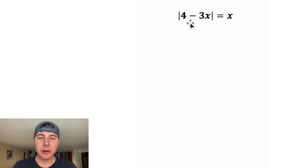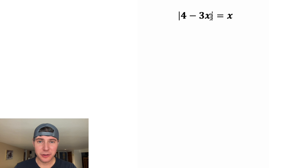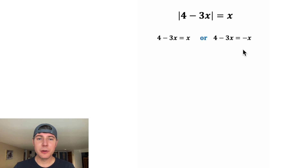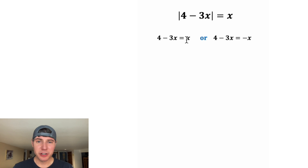Hey guys, so we have the absolute value of 4 minus 3x is equal to x. Absolute value means that whatever's inside here, you need to make it positive. So there are two ways this can be true: if this stuff inside is equal to x, or if it's equal to negative x. That's usually the way you solve these — you split it up into the positive case and the negative case.